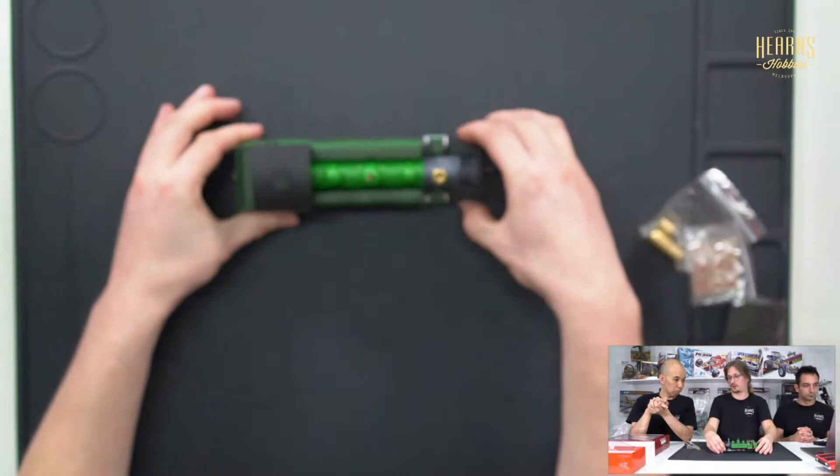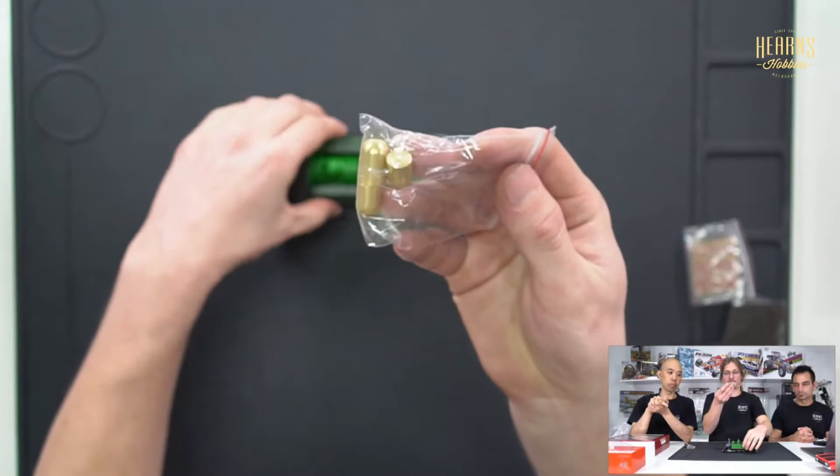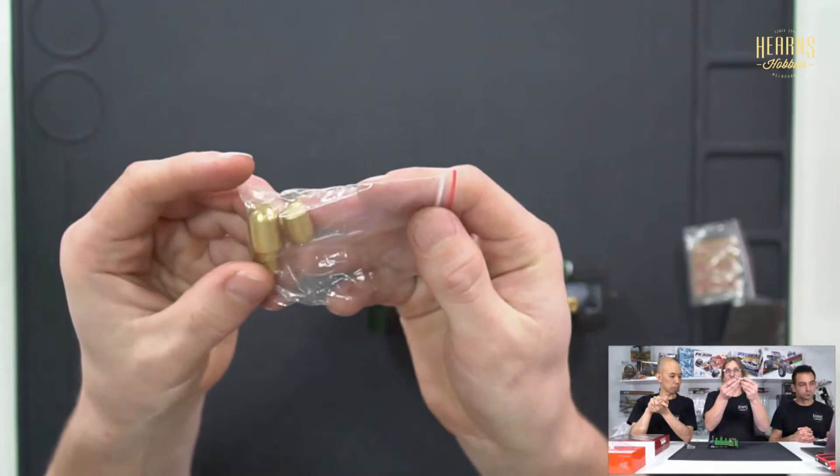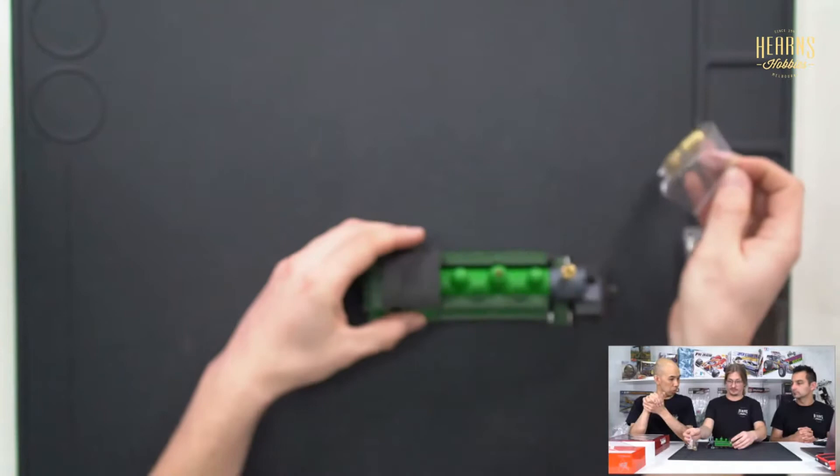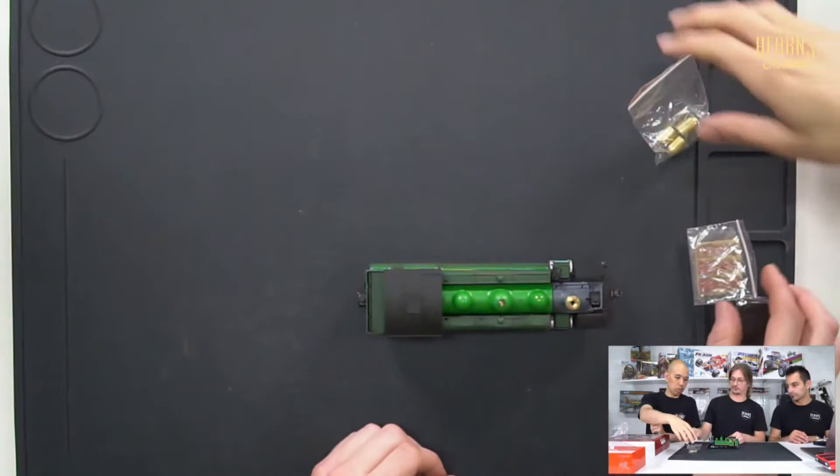You've got replacement solid brass domes so you can replace these with solid brass units if you want to. The idea is to give it a bit more weight to make it more stable in running. You remove the body and pop them in from the inside.